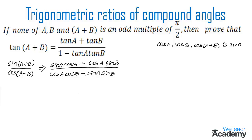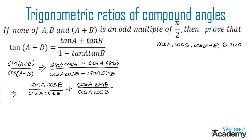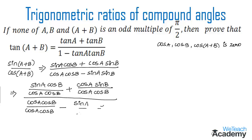Now we divide both the numerator and the denominator by cos a cos b. This gives us each term divided by cos a cos b, including the term sin a sin b divided by cos a cos b. Now let us simplify.